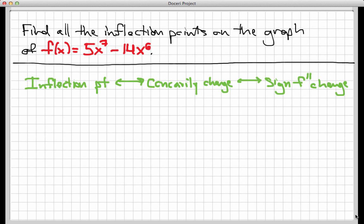Let's review the main concept that's going to underlie all the calculations we do here. If you have an inflection point on the graph of a function, it means it's a place where the concavity of the function changes. Something we know about concavity is that it's measured by the second derivative — namely, when a function's second derivative is positive, it means the original function is concave up, and where the second derivative is negative, it means the original function is concave down.